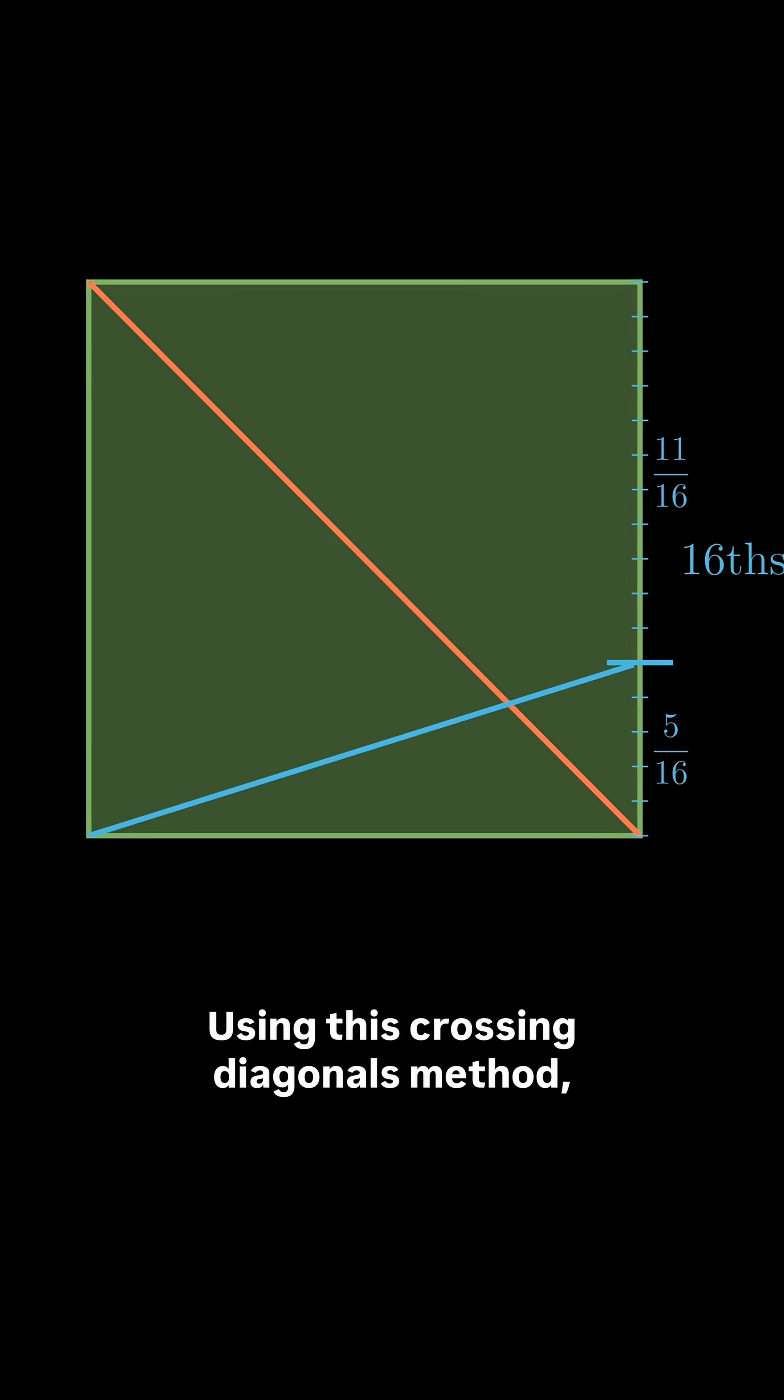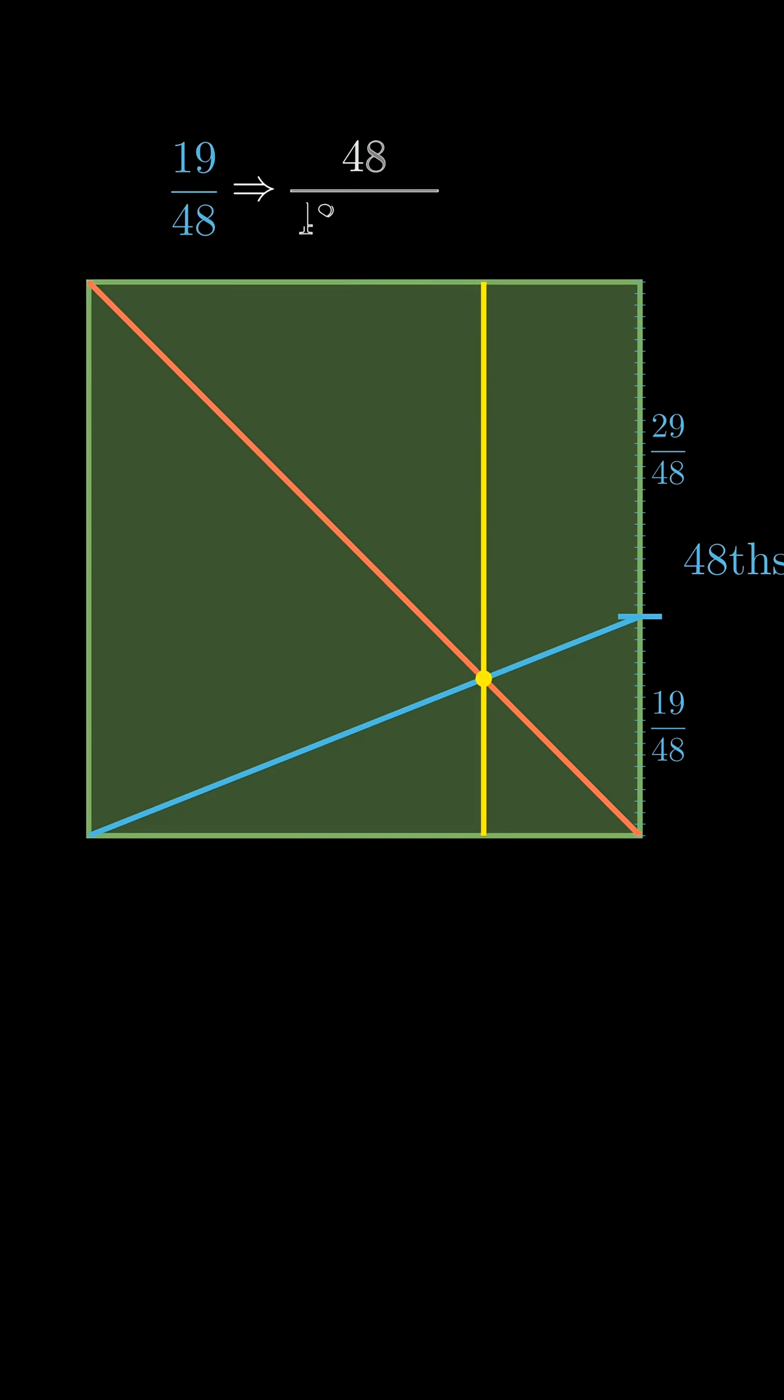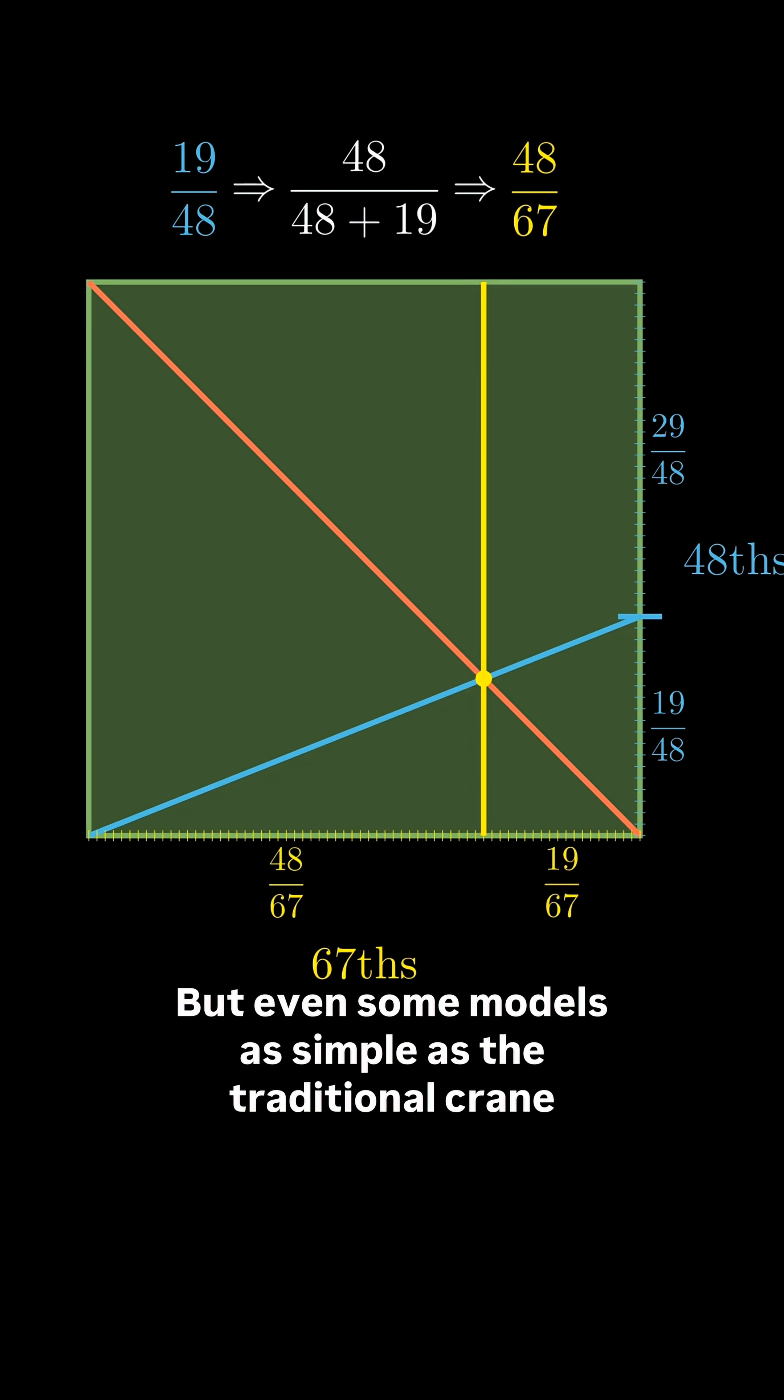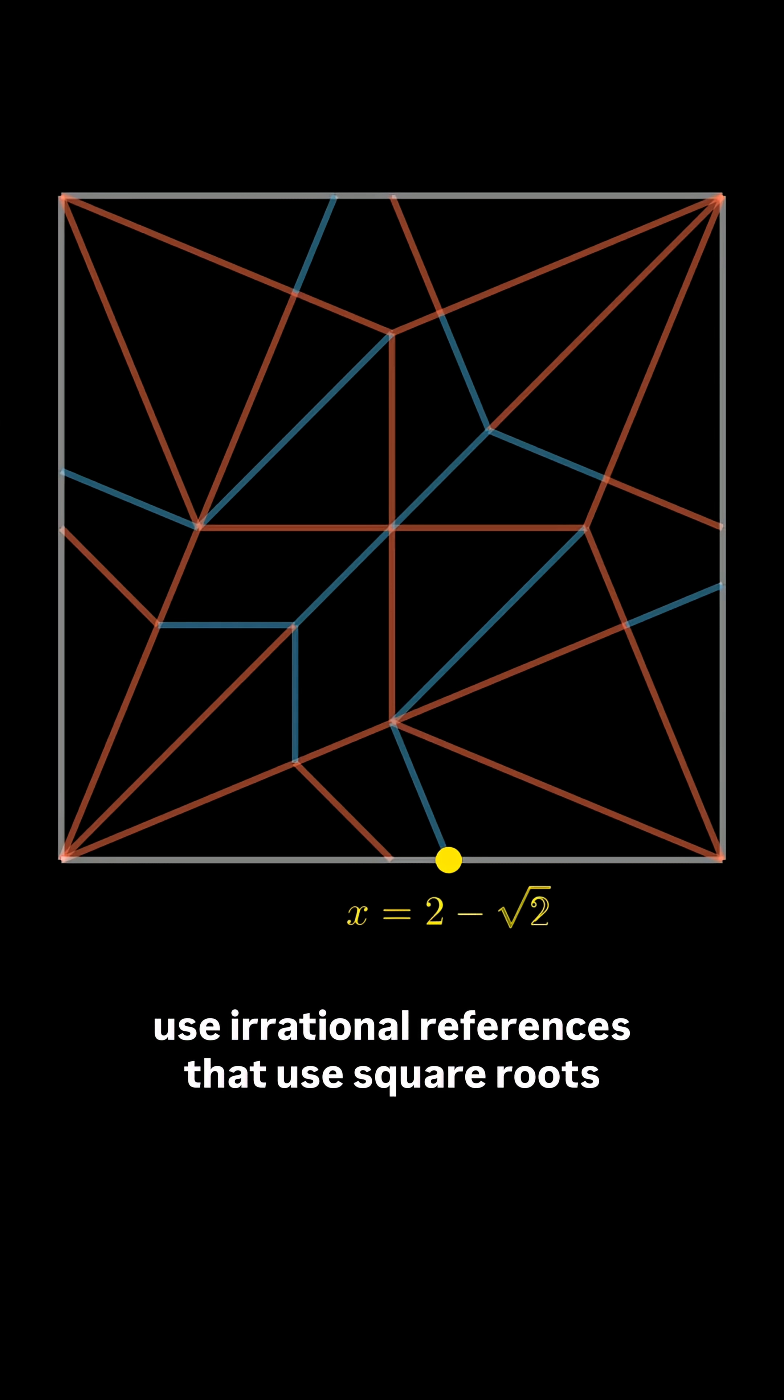Using this crossing diagonals method, we can find any rational fraction on the paper. But even some models as simple as the traditional crane use irrational references that use square roots. And how are we going to find those?